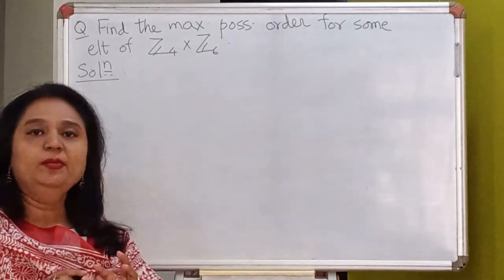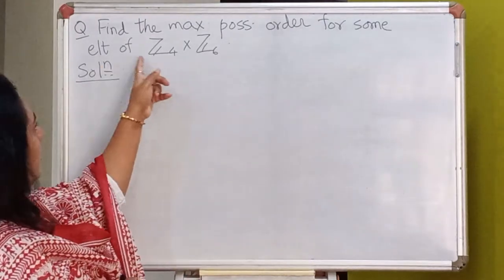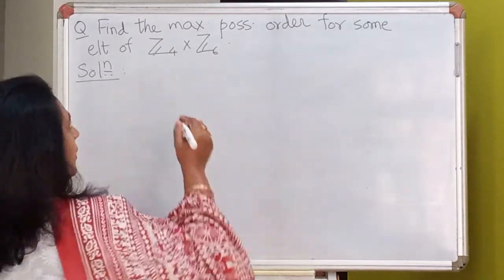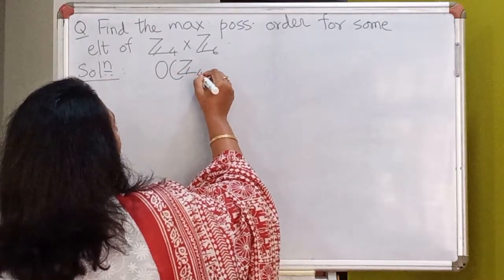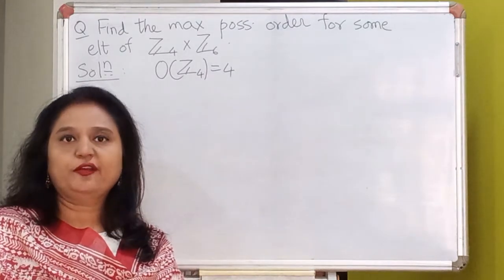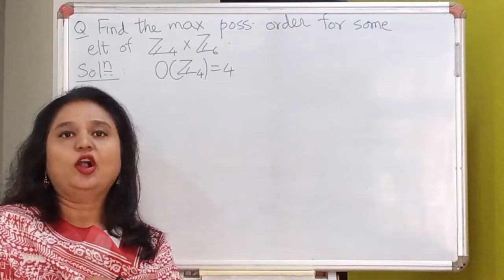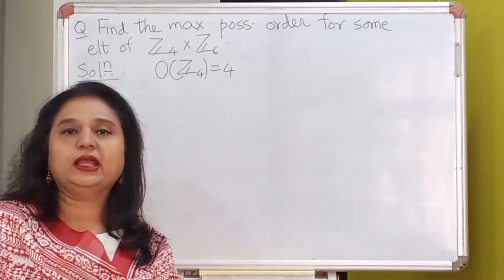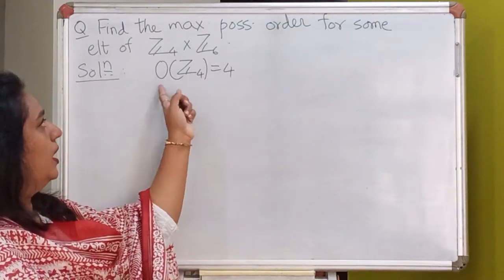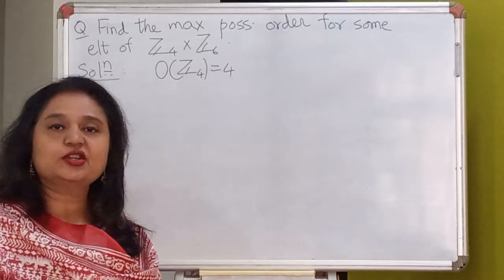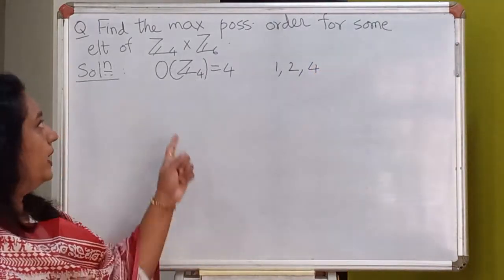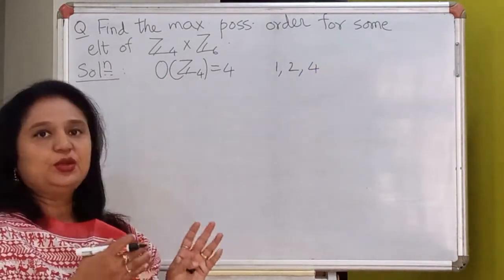Let's look at the next problem: find the maximum possible order for some element of Z4 cross Z6. First, let's look at the group Z4. The order of Z4 is 4. For a finite group, the order of every element is finite and must divide the order of the group. So the possible orders of elements in Z4 are 1, 2, or 4. There cannot be an element of order 3 in this group.